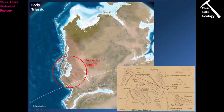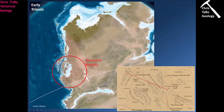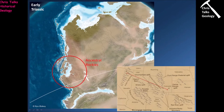Looking at this map — which is actually from the early Triassic but shows the position of the ancestral Rockies quite nicely — the ancestral Rockies are located in this area between Colorado and New Mexico. A subduction zone was running along what is now the modern-day west coast. The tectonic forces produced by this subduction zone may have caused the formation of the ancestral Rockies, but it is a very long way from the trench to their location.